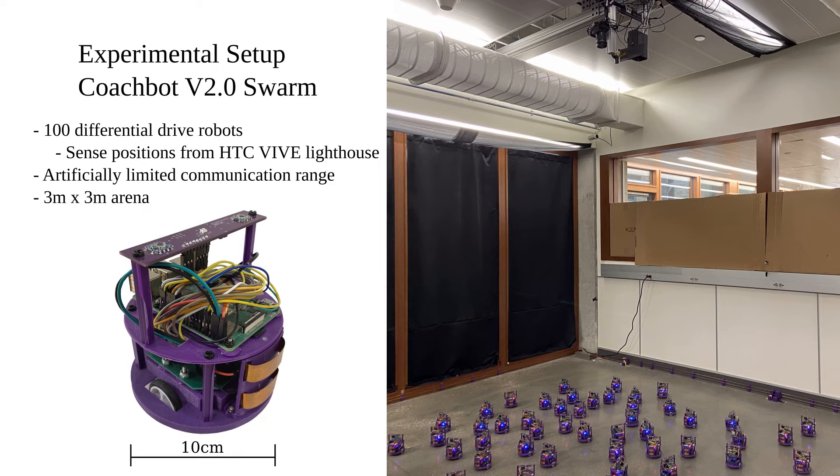The CoachBot V2 swarm setup was used to test the algorithm. There are a total of 100 identical differential drive robots in a 3 meter by 3 meter arena. Due to space constraints, 50 robots were used to test the bunny head and 30 were used to test the two disks.